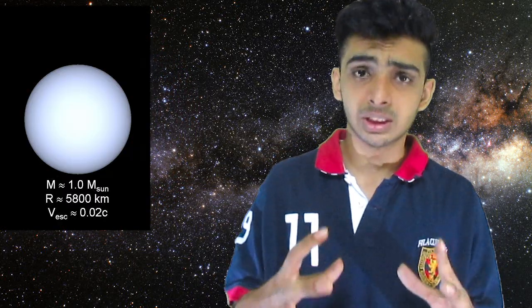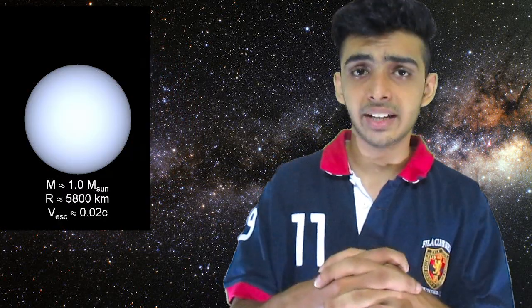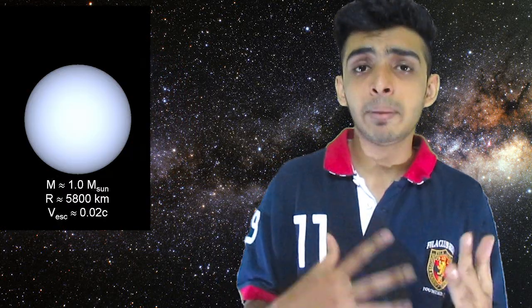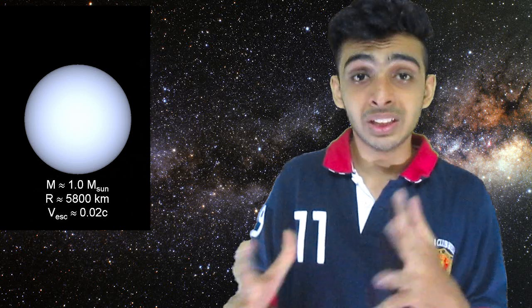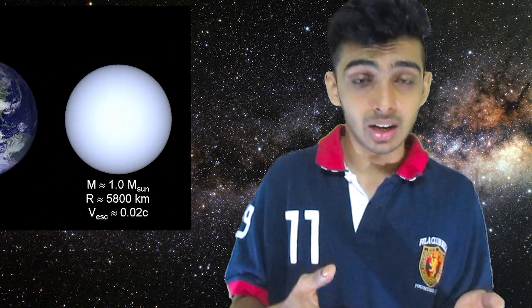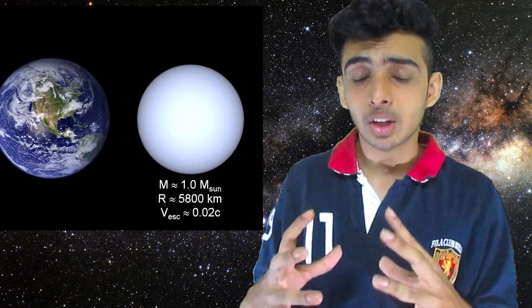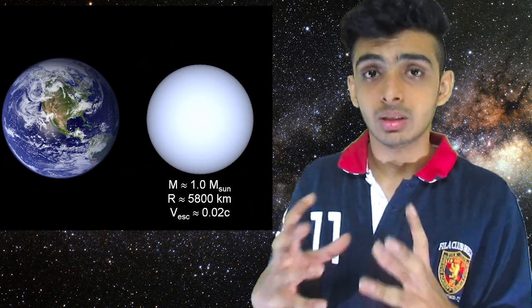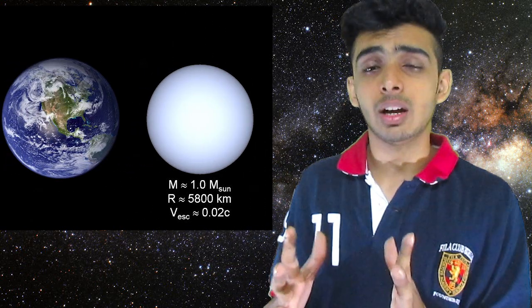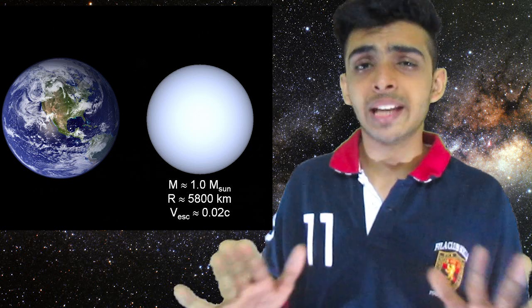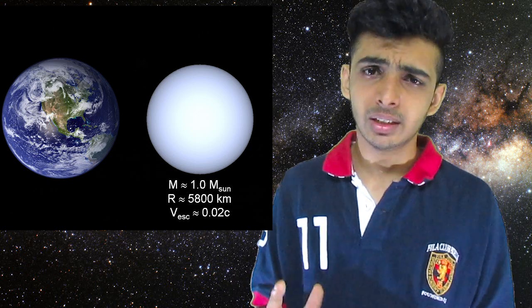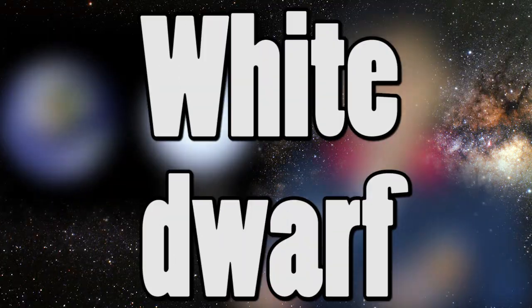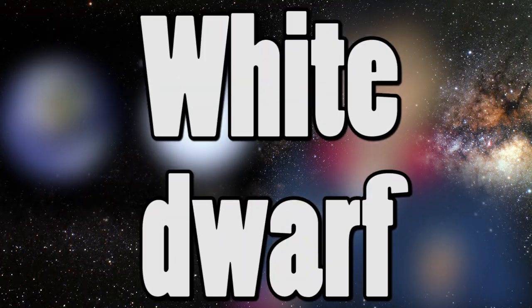For a small star, even though gravity collapses the material inside it, the repulsive force between the electrons in the star holds the collapse and this star eventually dies peacefully. These types of stars are called white dwarfs.